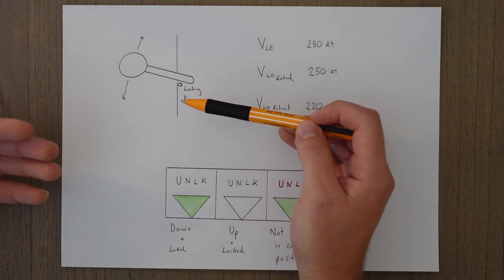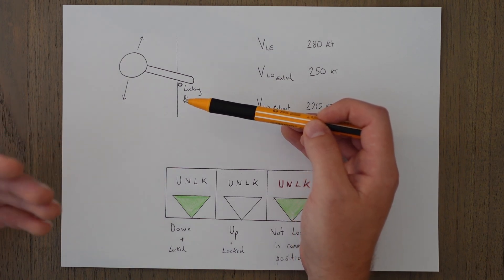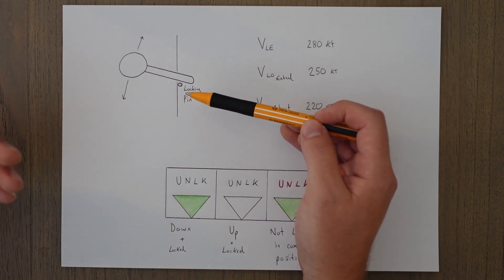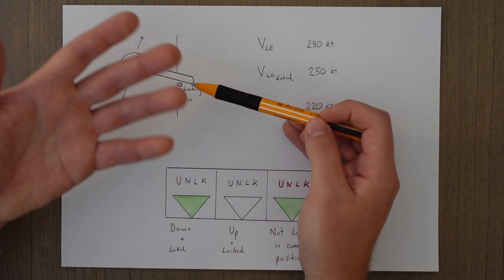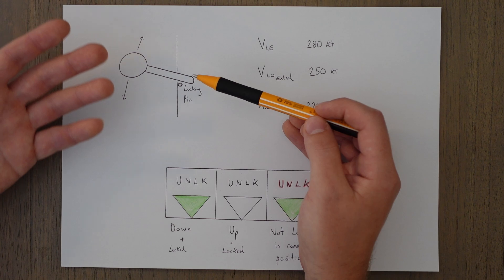This lock will be activated by small switches on the main landing gear which are called weight on wheel switches. There is no indicator for us to see that these switches are active or not because it should be obvious to us if we're on the ground or not.